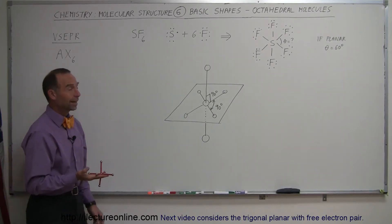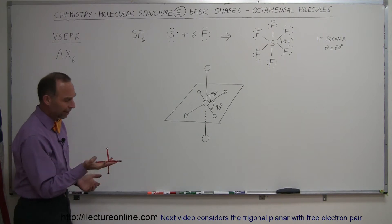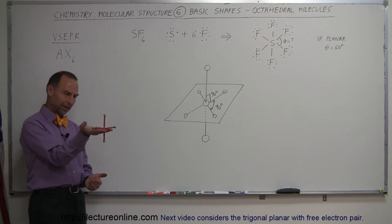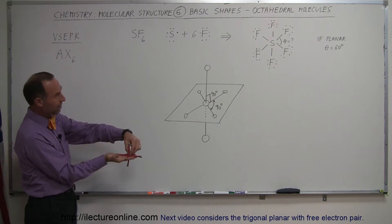Here's our next basic shape. It's called the octahedral molecule, and octahedral means eight sides. So what you have here, and I don't know if you can see it, but notice we have a central atom right here.